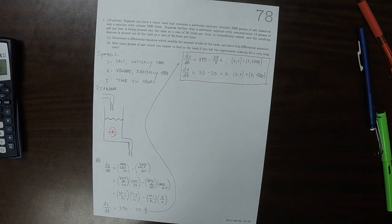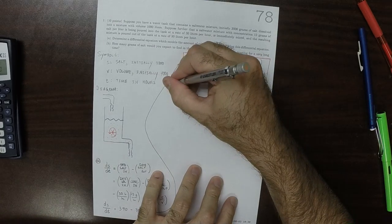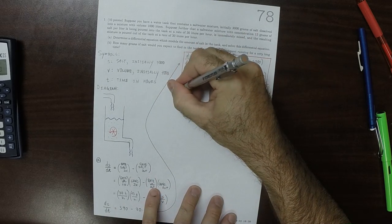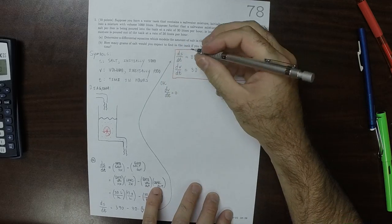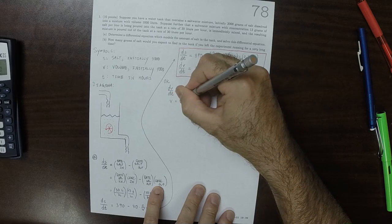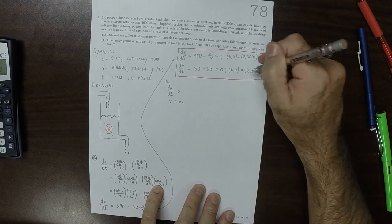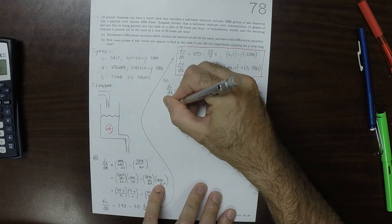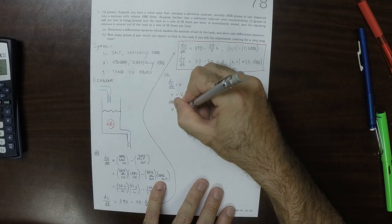So now to continue part A, it says solve these. Well, since dV/dT is 0, that implies that V is some unknown constant, and from the initial data we know that 1000 should be V(0). So as a result V is just 1000.